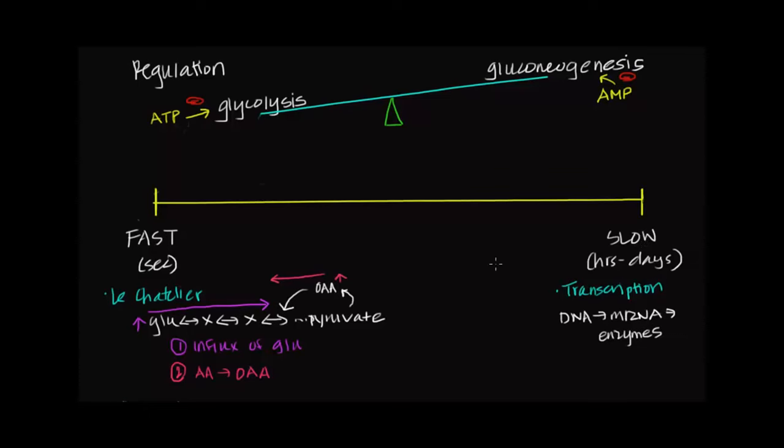You can imagine that this might be very useful if the organism is in a long-term fasting state. It will want to essentially up-regulate the transcription of enzymes that promote something like gluconeogenesis so that it can dump glucose into the blood. Notice that this process of going from DNA to mRNA to enzymes is going to take much longer than a simple Le Chatelier or allosteric regulation. That's why this process is more of an adaptive process that allows the organism to adapt to more long-term changes that it experiences in its environment.